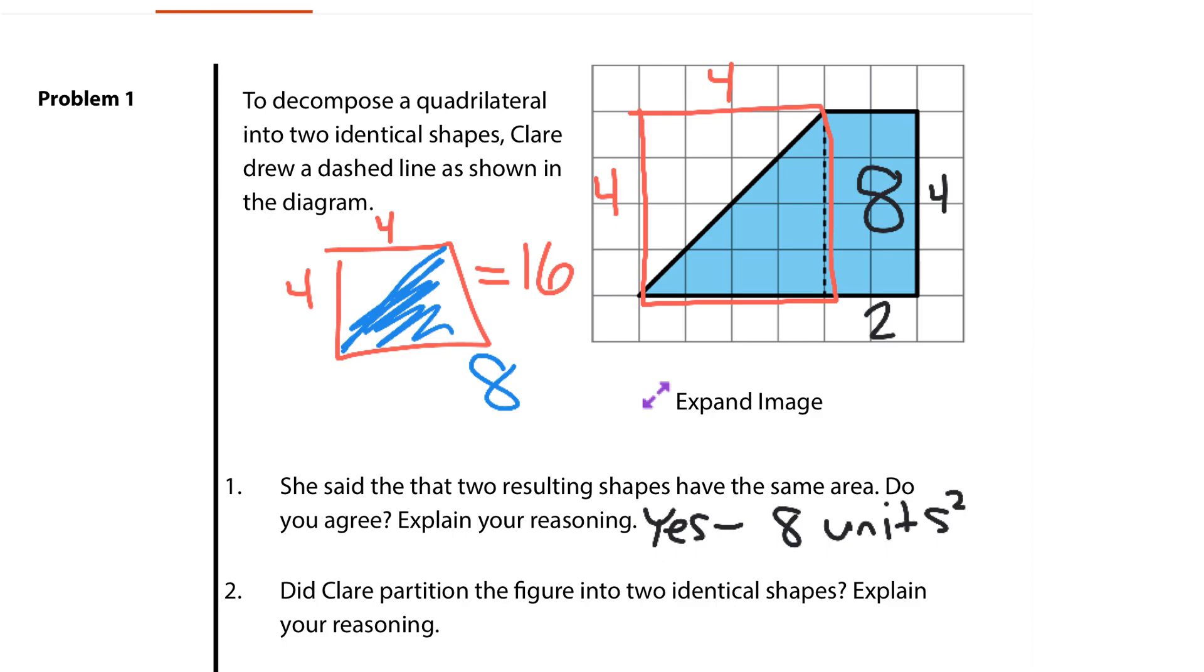Did she have two identical shapes? No. I mean, one's a square and the other's a triangle, and just because they have the same area does not mean they are identical shapes.